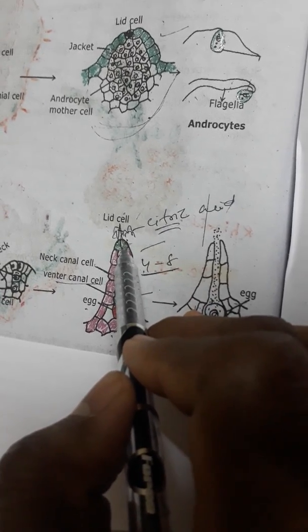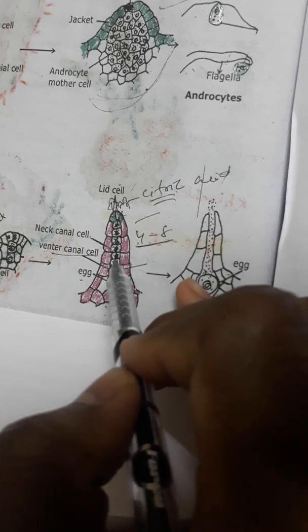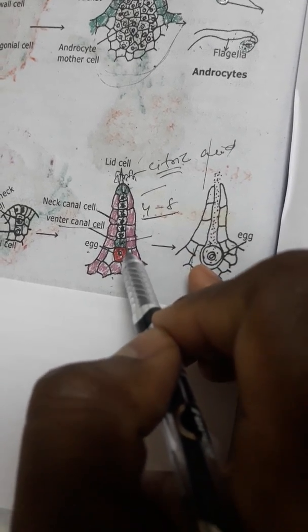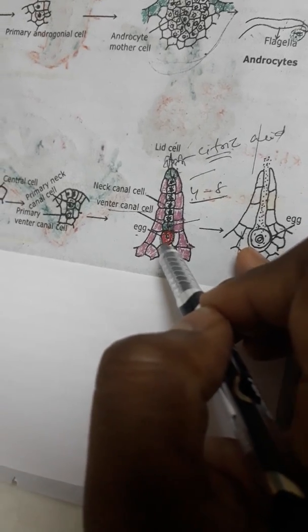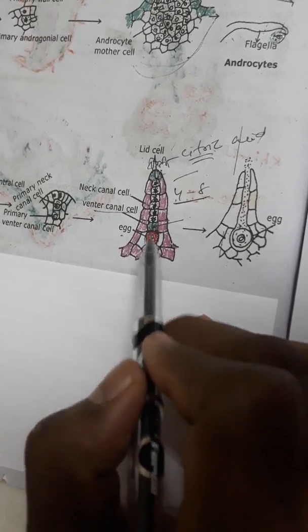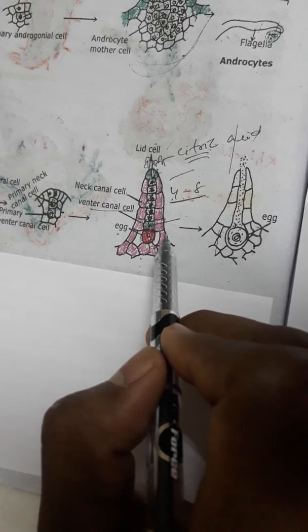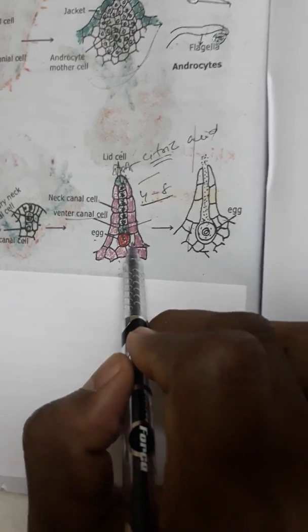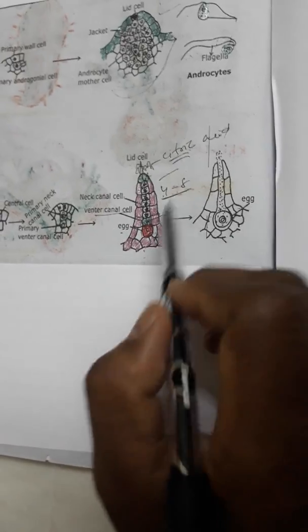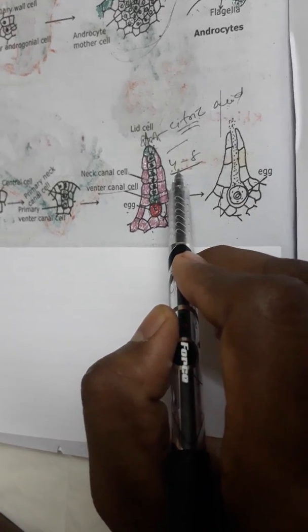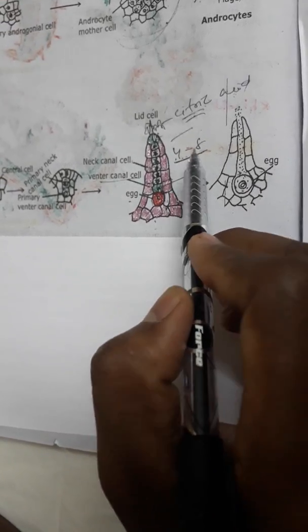finally, it passes along the neck and finally fuses with egg to form fertilization to form a zygote or embryo. The embryo formation takes place at venter of archegonium. That fertilization is called chemotactic fertilization. The chemical name is citric acid. The number of neck canal cells are four to eight.